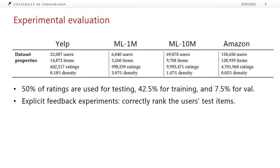In order to evaluate the performance of our projected Hamming dissimilarity on codes optimized for it, we use four publicly available datasets: Yelp, ML 1 million, ML 10 million, and Amazon. These have a very different number of users and items and density, so they present a variety of different settings. For each user, we randomly sample 50% of the ratings for testing, 42.5% for training, and the rest for validation. The task is to correctly rank the user's test items based on the provided ratings, in an explicit feedback setting.